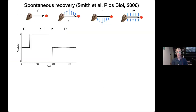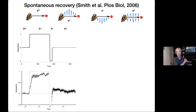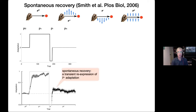Here's an interesting paradigm called spontaneous recovery. You bring people in, give them some P0 with no force field, then a block of P plus, then a small amount of P minus to bring them back to baseline. Then you put them into a long series of channel trials where there's nothing to learn. The interesting thing is when you do that, you see the following: participants tend to re-express P plus — a transient re-expression of P plus even though all these trials are in channels. This spontaneous recovery is somewhat surprising.